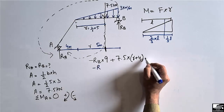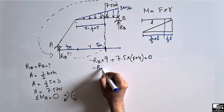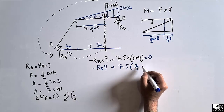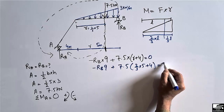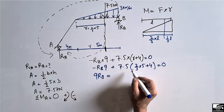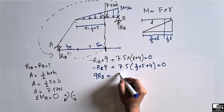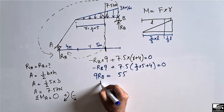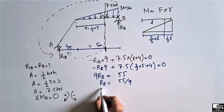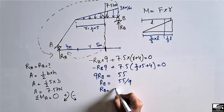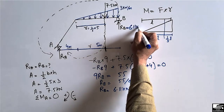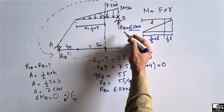Substituting into the moment equation: −R_B × 9 + 7.5 × (2/3 × 5 + 4) = 0, which gives 9 R_B = 55. Therefore R_B = 55 ÷ 9 = 6.11 kN. So the support reaction at point B is R_B = 6.11 kN.